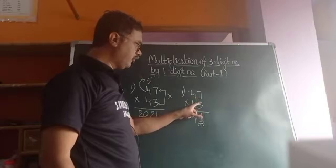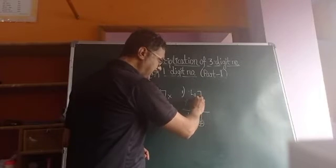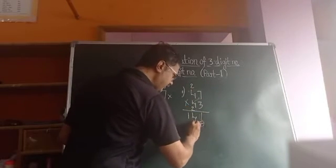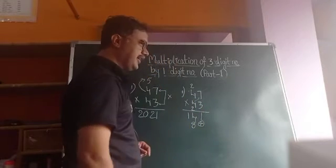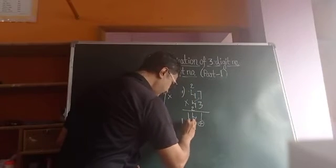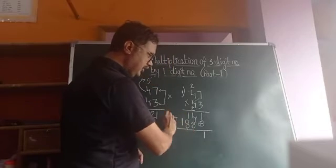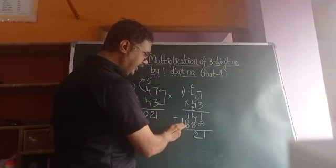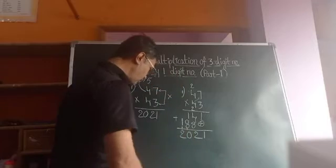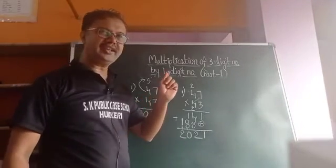Next row: 7 times 4 is 28, write 8 carry 2; 4 times 4 is 16, plus 2 is 18. Now adding: 1 plus 4 is 5... 8 plus 4 is 12, carry 1; 1 plus 8 plus 1 is 10. We got the answer 2021. So with the trick method, you can get this answer within 10 seconds.